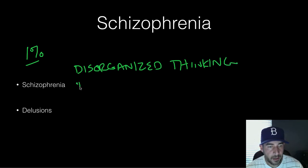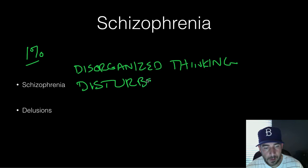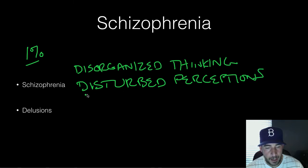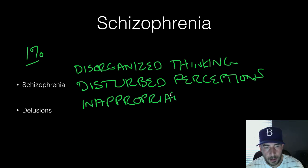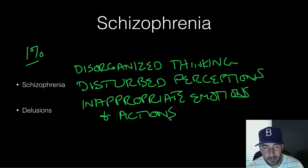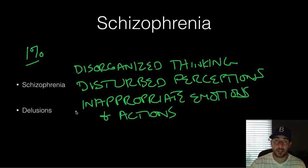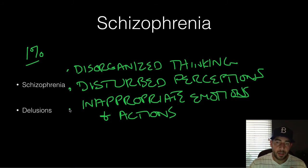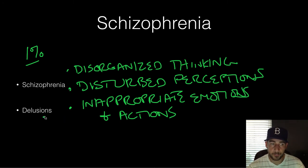You have disorganized thinking, disturbed perceptions, and inappropriate emotions and actions. You might get too excited, you might be too mad — whatever the situation is. You spill a cup of water and you might flip out completely, or you might get way too excited for situations. Disorganized thinking, disturbed perceptions, and inappropriate emotions and actions are the three hallmarks of schizophrenia.